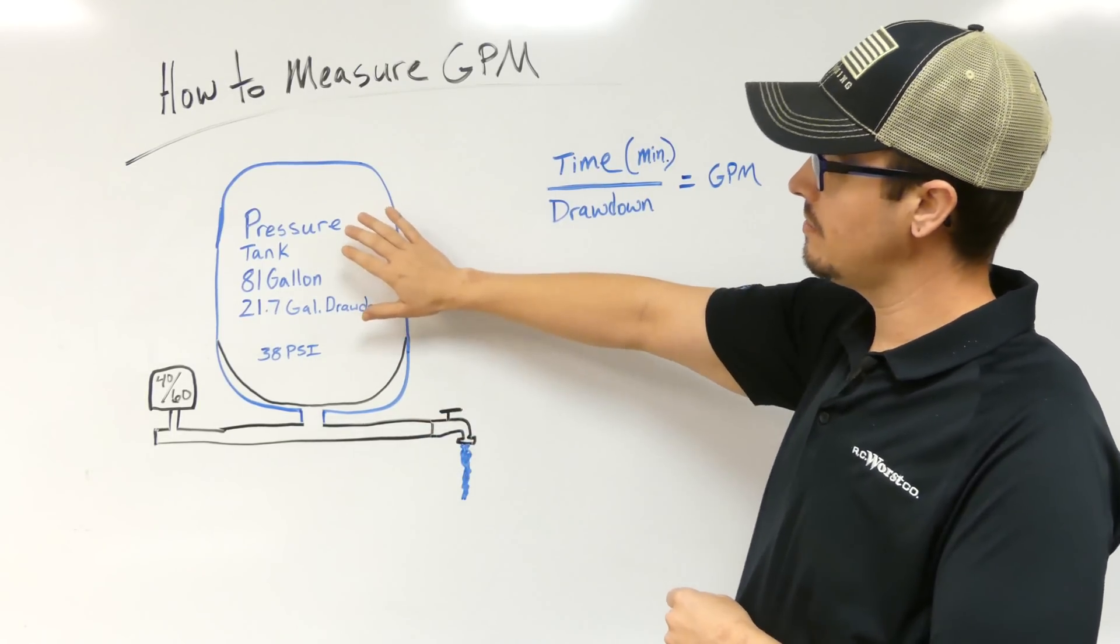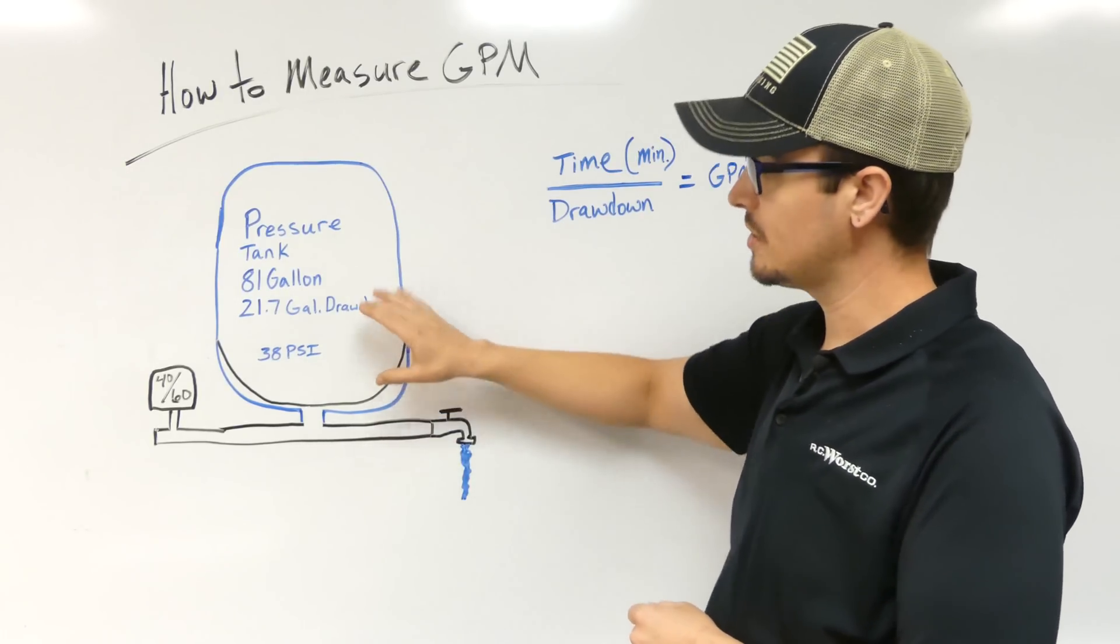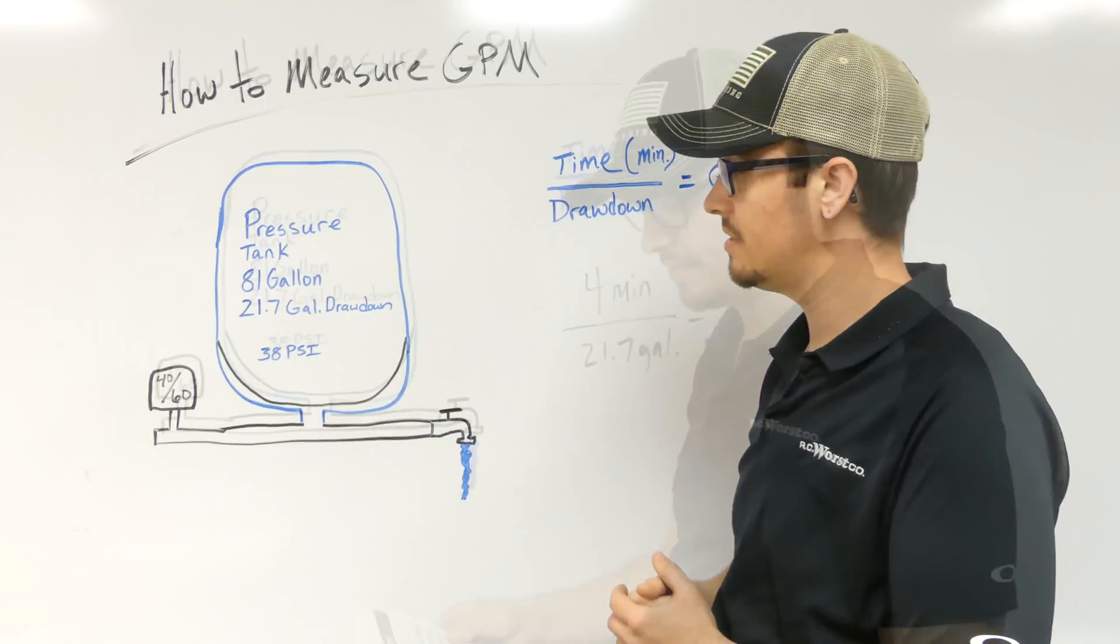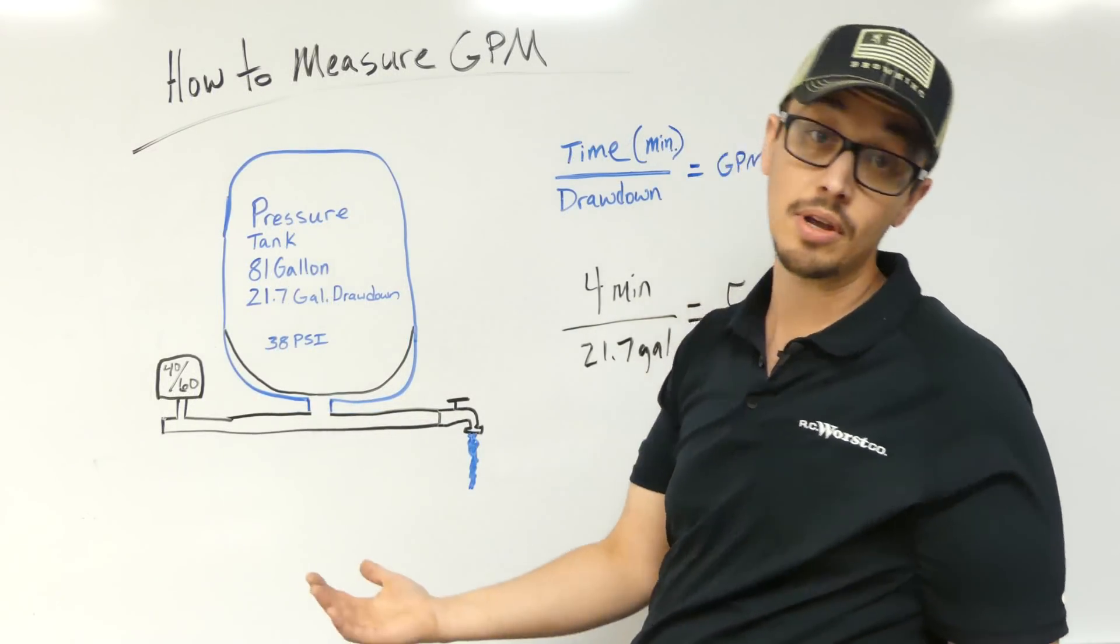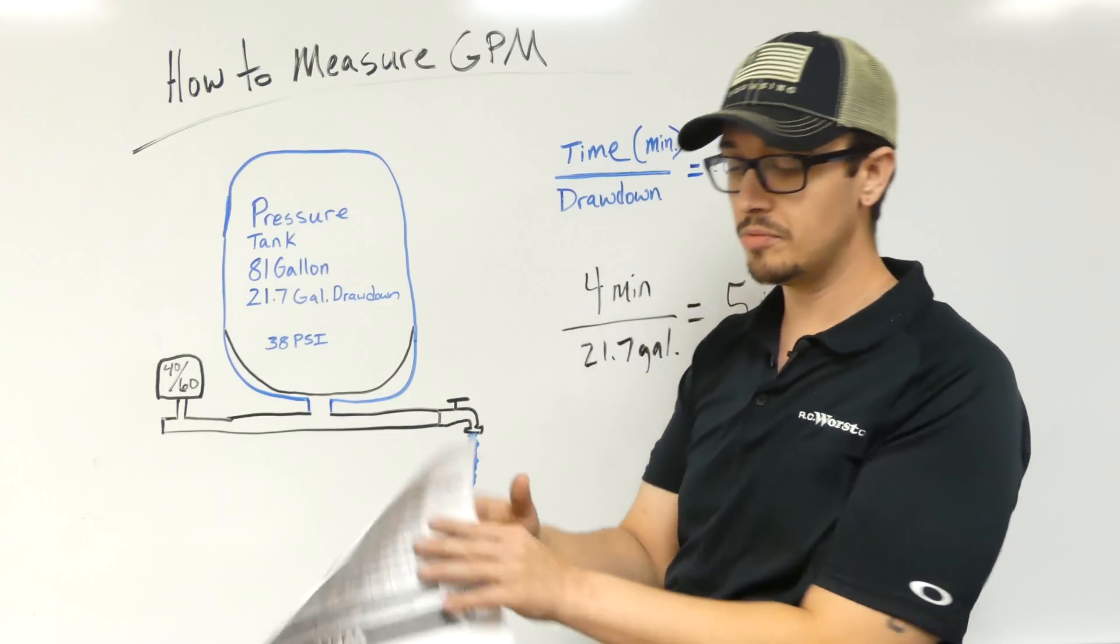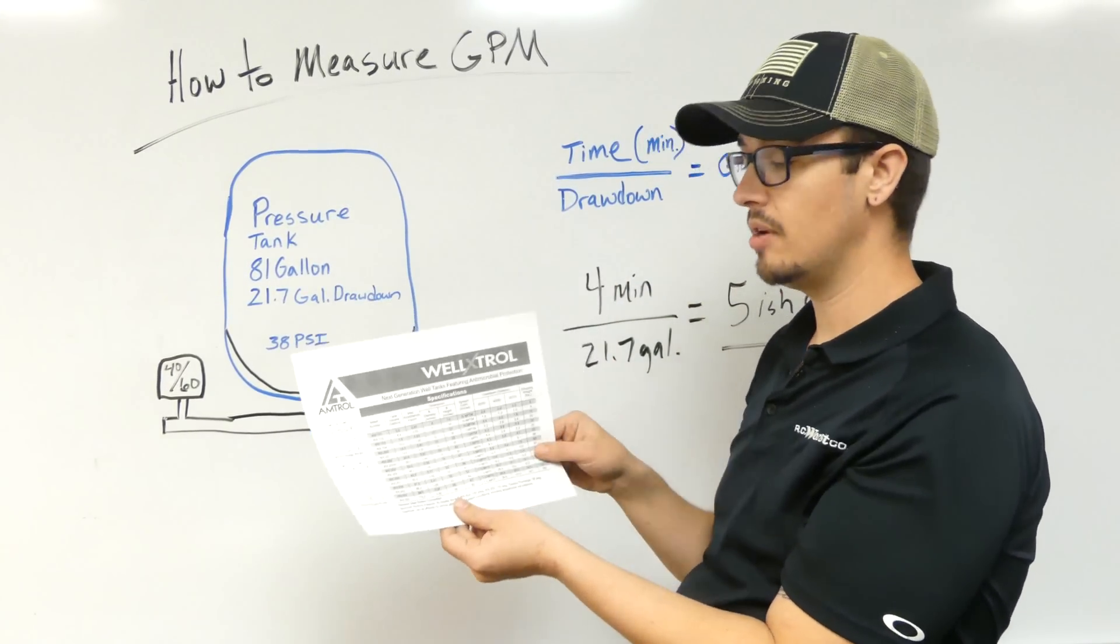This here we've got an 81 gallon pressure tank, and you want to look at the manufacturer's drawdown listing. In case you don't know the make of your pressure tank, or if you happen to have a Well-X-Trol pressure tank, or you just want some example numbers, this is linked in the description below.